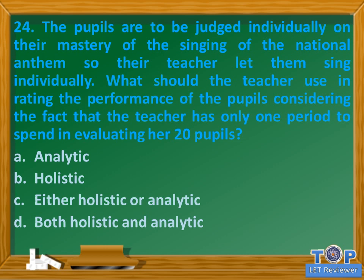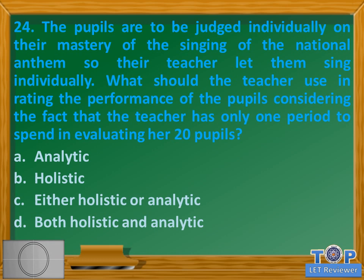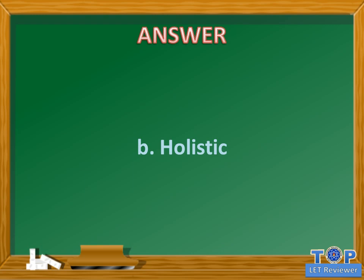Question number twenty-four: The pupils are to be judged individually on their mastery of singing the national anthem, so their teacher let them sing individually. What should the teacher use in rating the performance of the pupils, considering that the teacher has only one period to evaluate 20 pupils? A. Analytic, B. Holistic, C. Either holistic or analytic, D. Both holistic and analytic. Answer: B. Holistic.